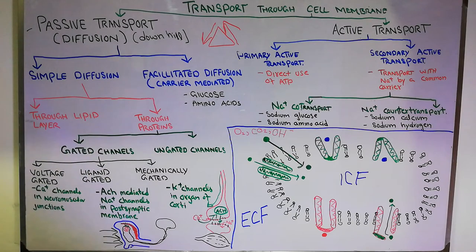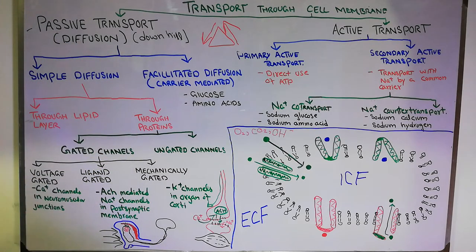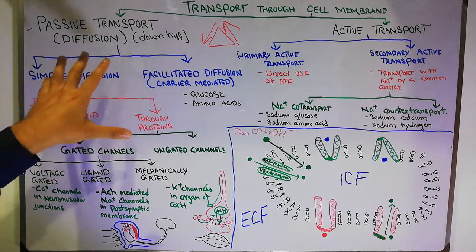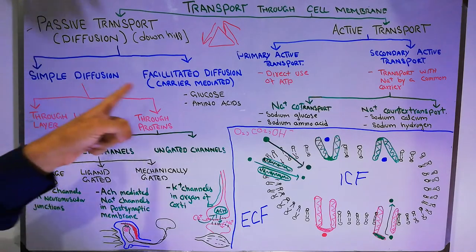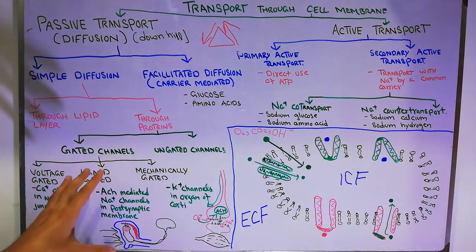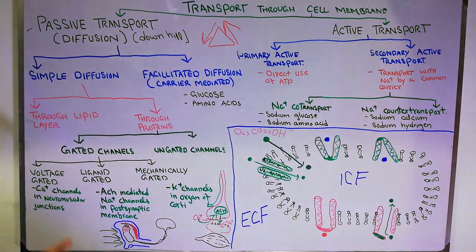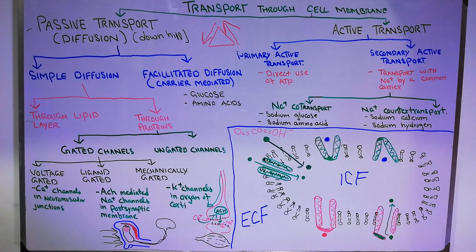This concludes passive transport — the type of transport that does not require any energy. To quickly revise: passive transport is also known as diffusion and is a downhill movement. It is of two types: simple diffusion and facilitated diffusion. Simple diffusion may be through the lipids directly or through the proteins, which may be further divided into gated or ungated. Gated channels may be voltage-gated, ligand-gated, or mechanically gated. In the next lecture we will discuss active transport and how ATP is required to move substances into and out of the cell.